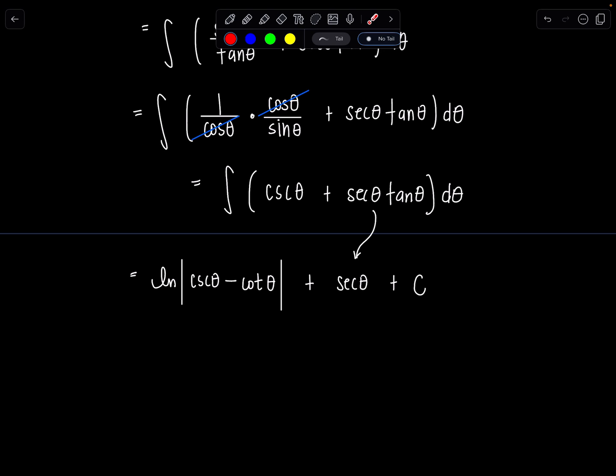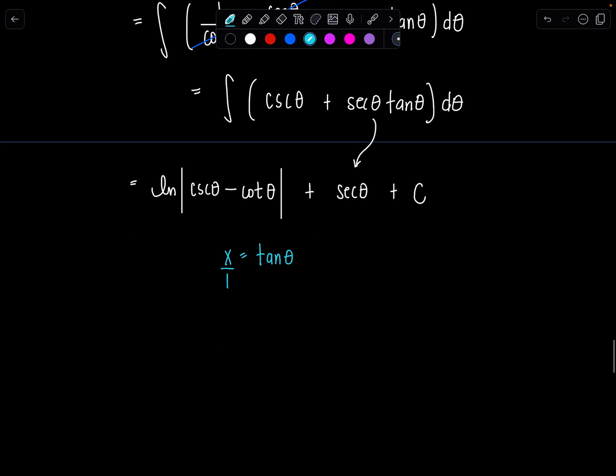Now don't box this answer. We're not done. Remember, everything started in terms of x. But we have an answer in terms of theta. So how do we get back there? Well, what was the substitution that we used? We had let x equal tangent theta. That's the same as saying x over 1 is tangent theta. Why do I want you to think about it that way?